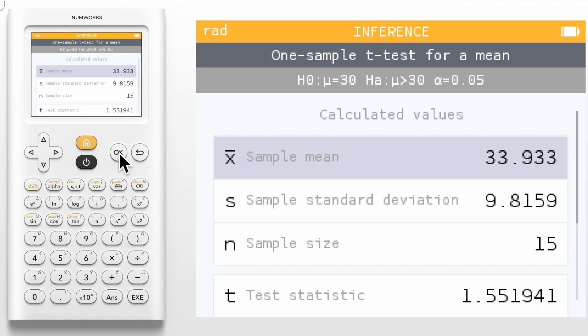The screen displays all needed calculated values such as sample mean, sample standard deviation, sample size, test statistic, p-value, and degrees of freedom.